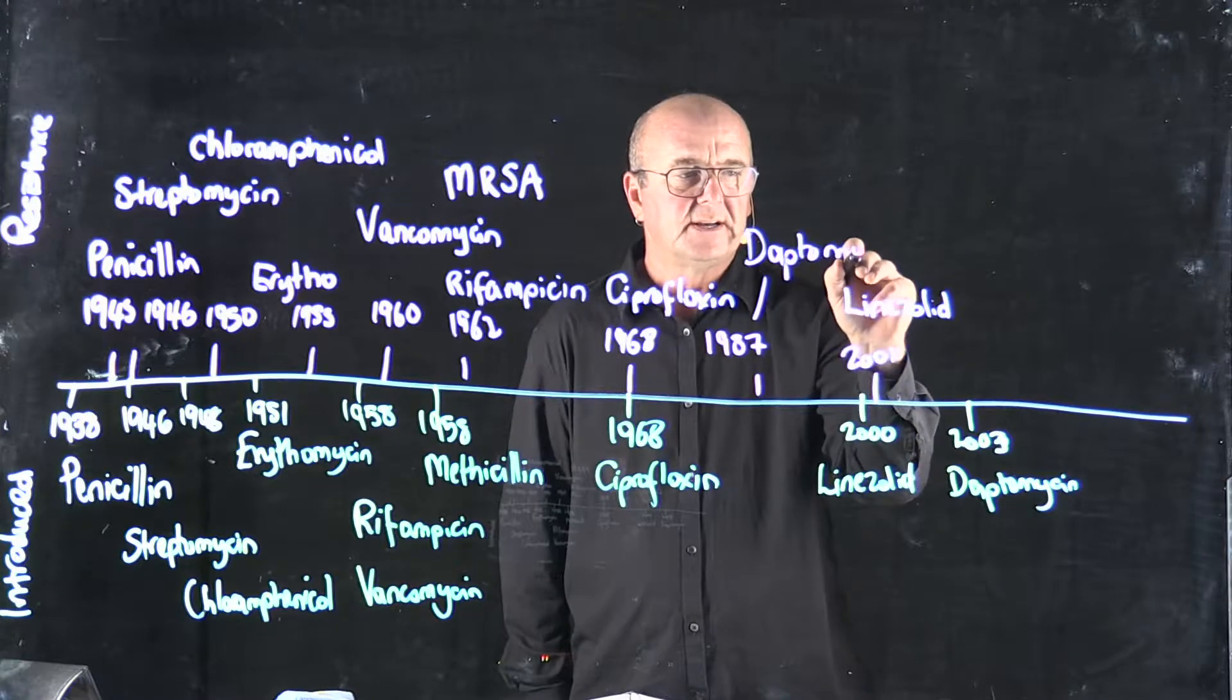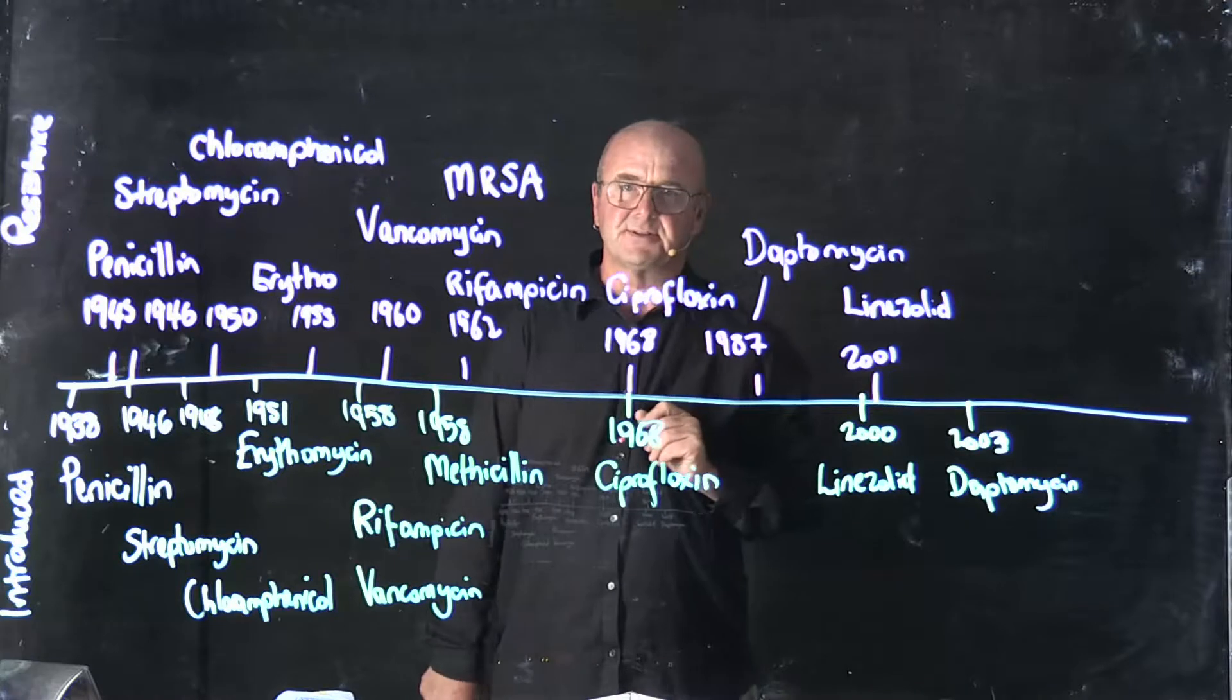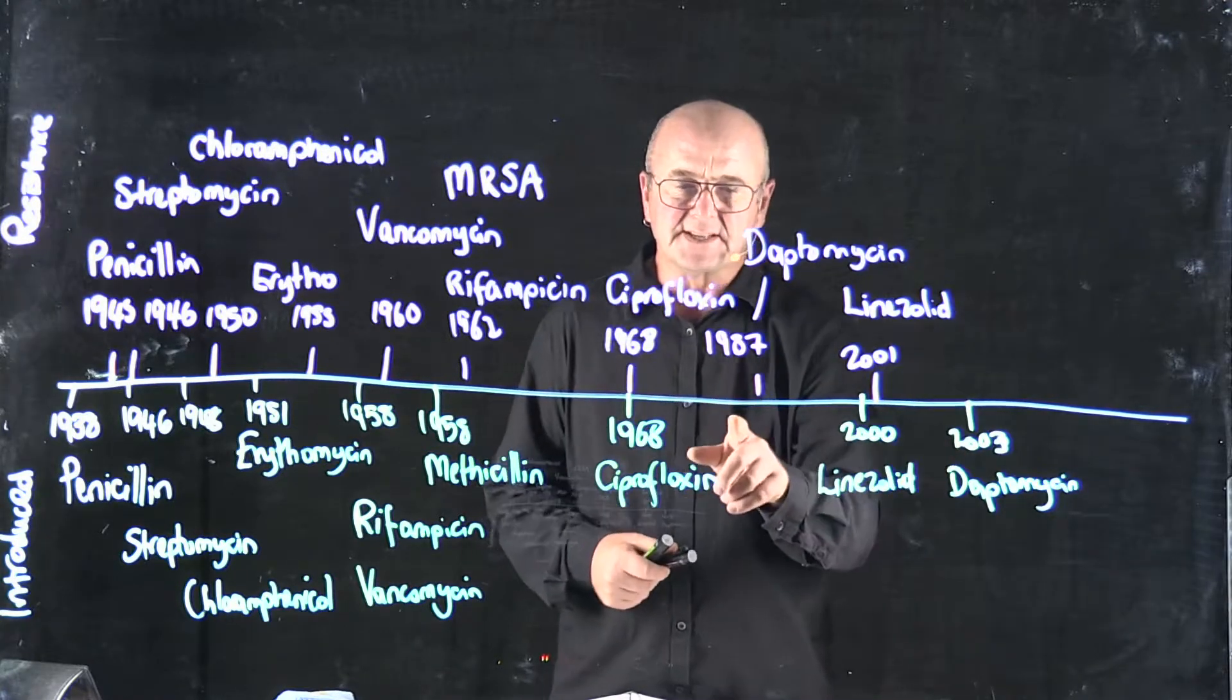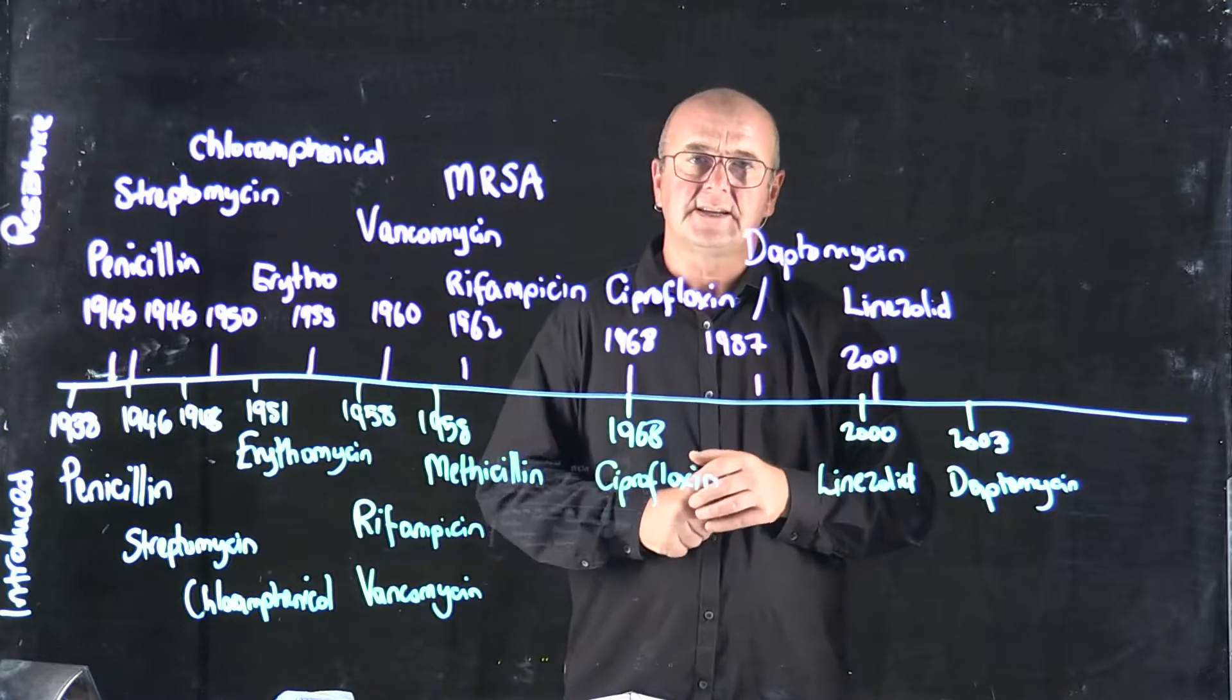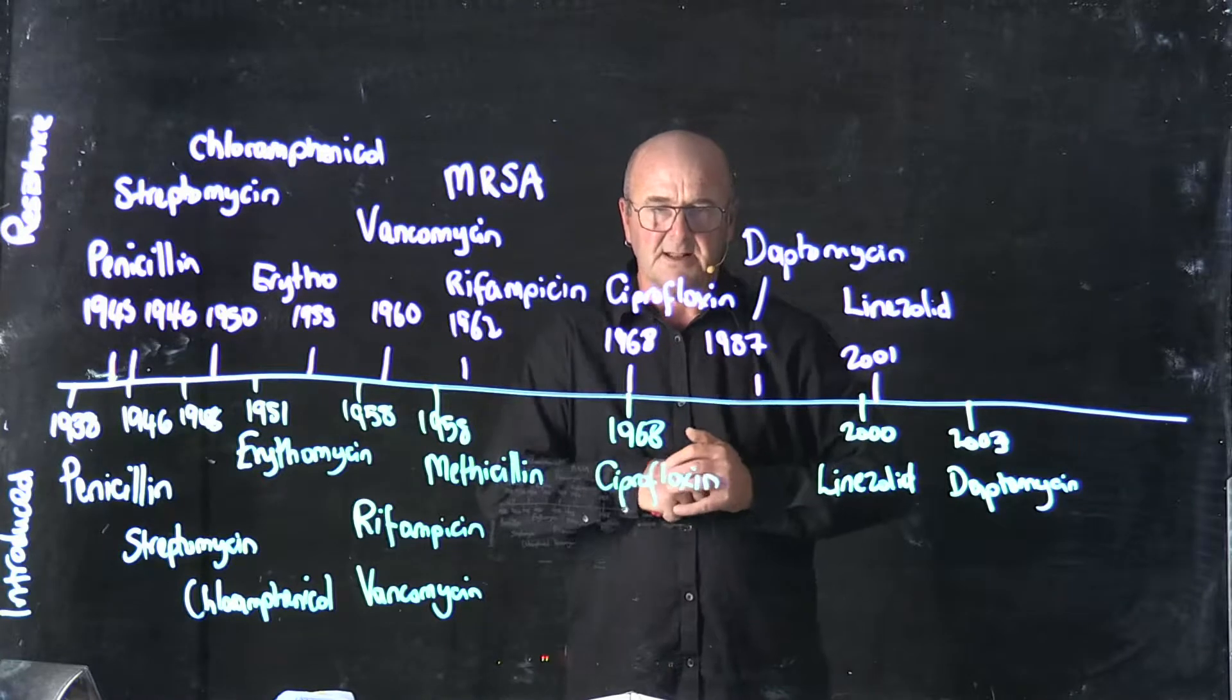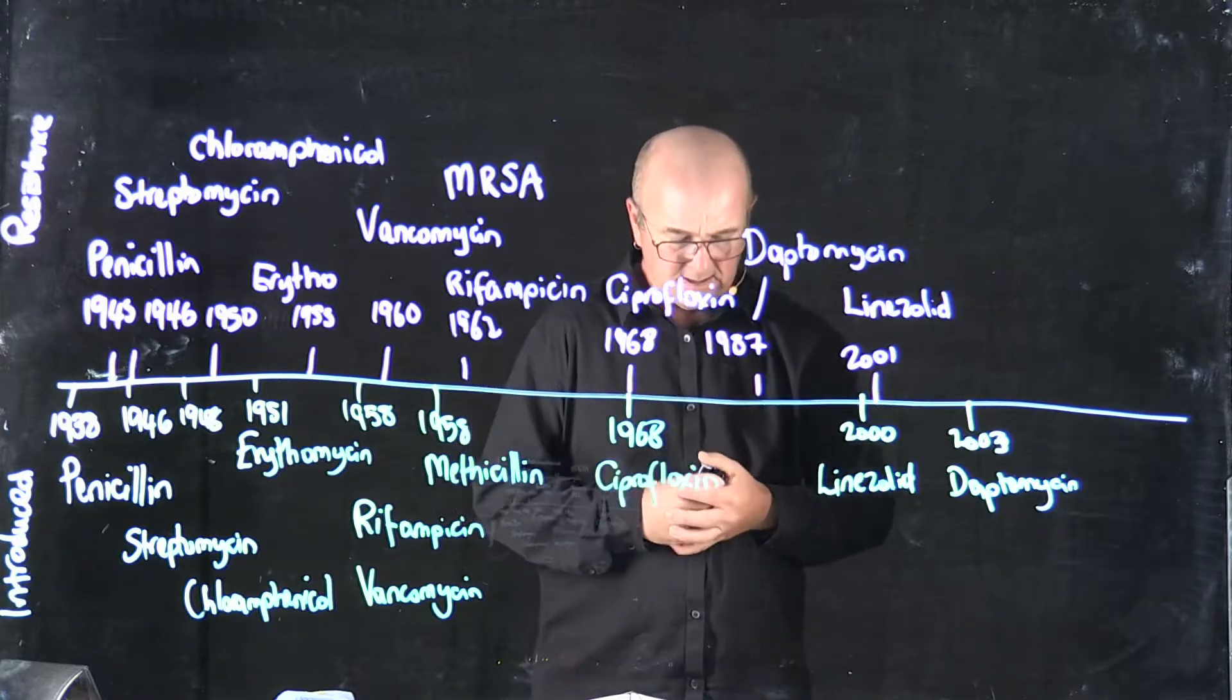Daptomycin resistance was actually discovered in 1987. Even though daptomycin wasn't introduced as an antibiotic until 2003. It turns out daptomycin was actually discovered in 1986. And then it took a while for it to be developed and released as a clinical antibiotic. And so that's why we knew about resistance then.